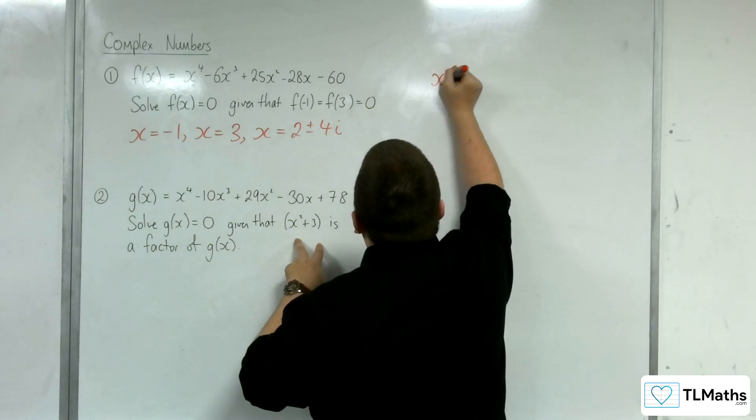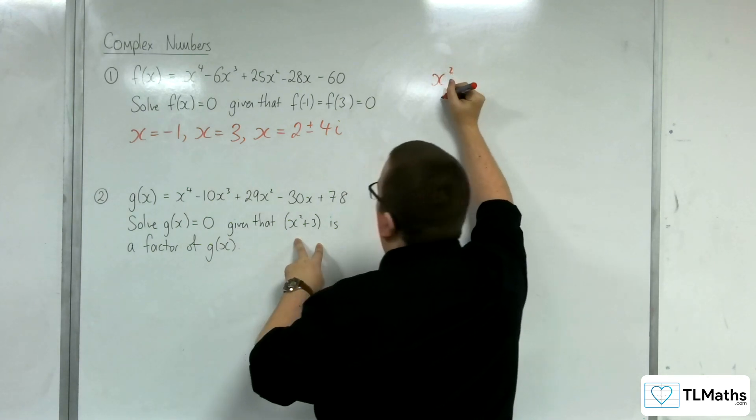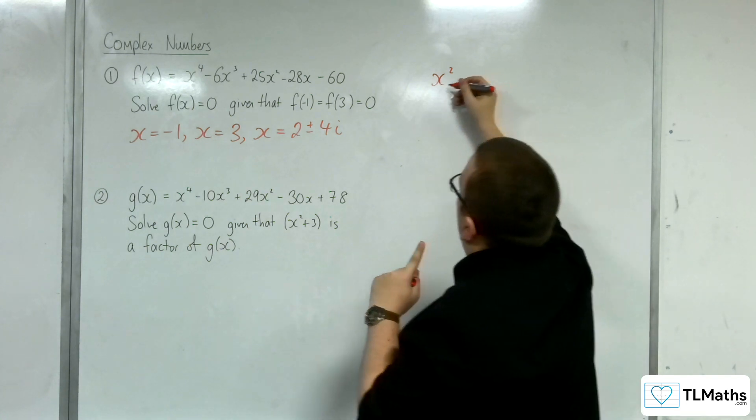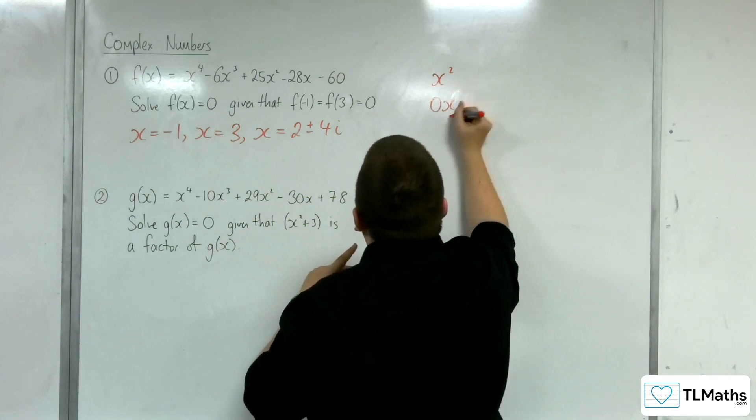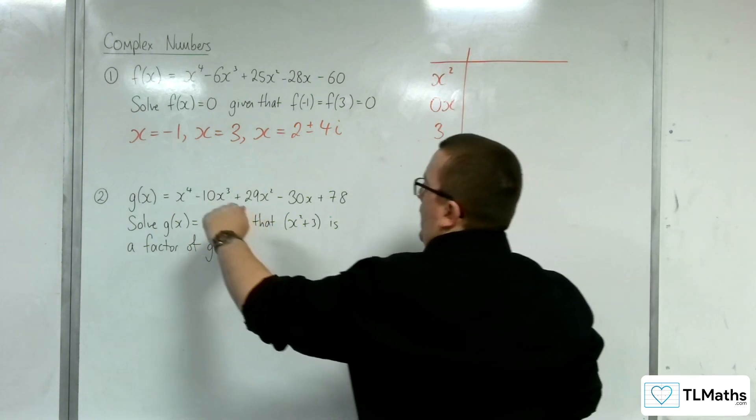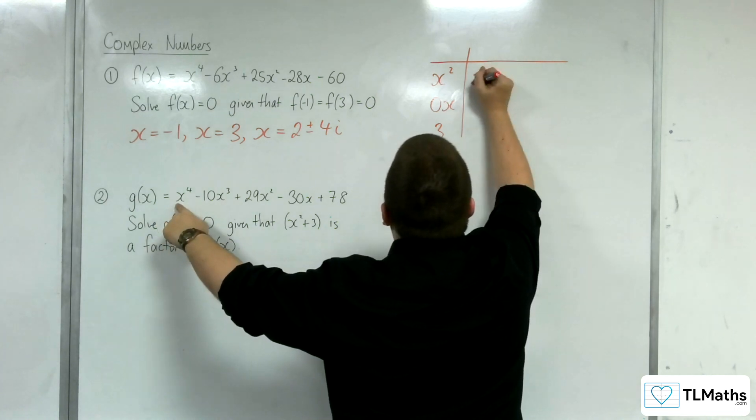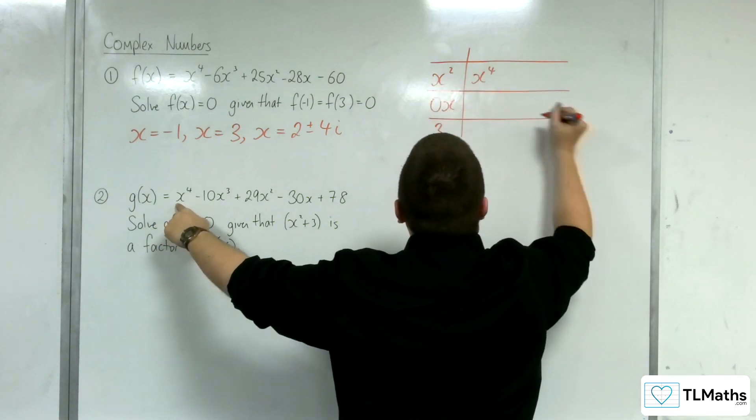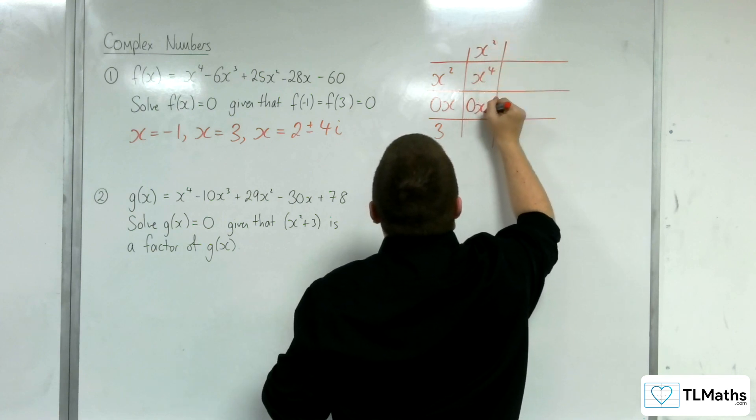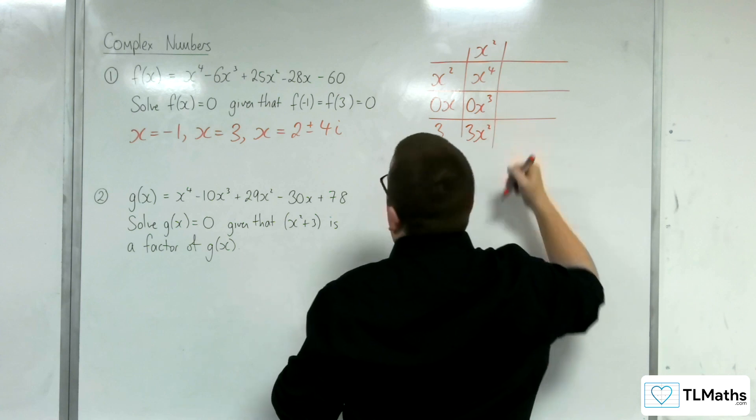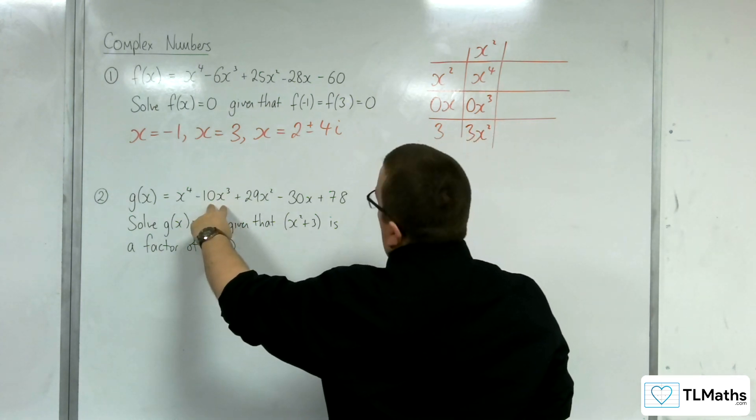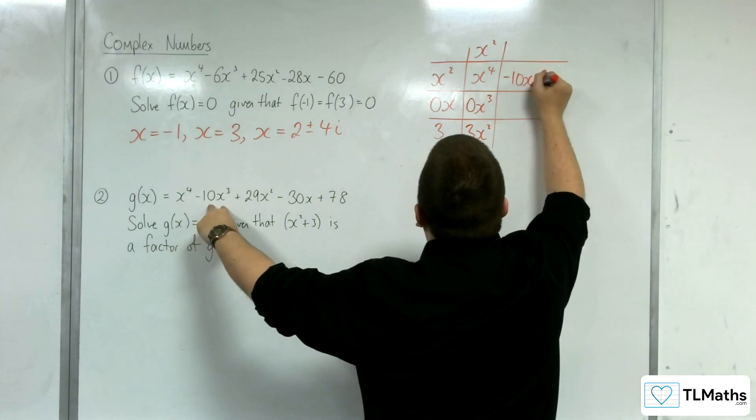So we've got the x². Now when I'm doing this, I usually put in a placeholder. So I put in 0x just in case I need it, and just also to keep track of things. So I want x⁴. So this would have to be x², then I'd get 0x³, I'd get 3x². Now I need -10x³, so this needs to be -10x³ here. So this would have to be -10x. So then I'd get 0x² there, I'd get -30x there.